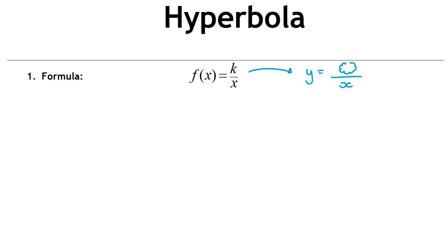The first thing to notice is the moment you have a denominator with x in it, you're going to have certain restrictions on what x can be. When you have a denominator, it can't equal zero — otherwise the entire fraction is undefined. So x cannot ever be zero in this particular instance.